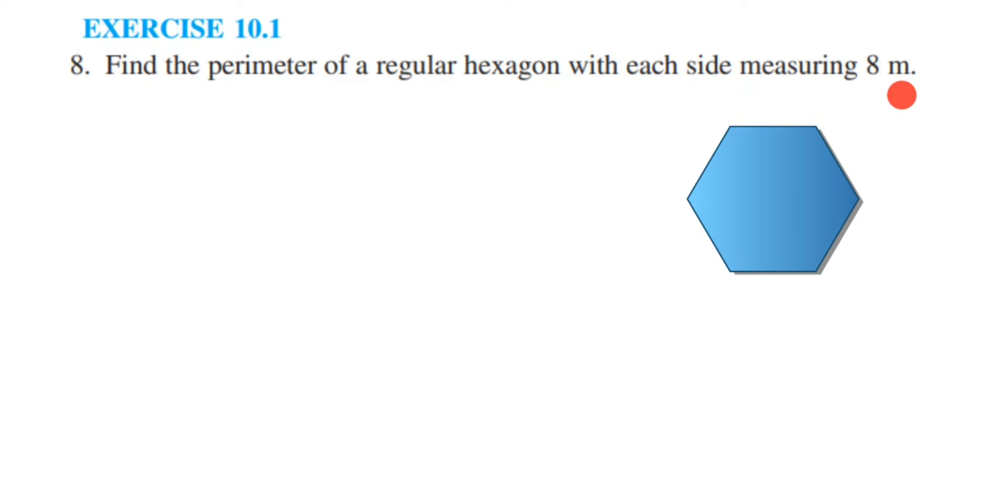Now what is regular hexagon? Hexagon is a polygon with 6 sides, like 6 side polygon is called as hexagon. You can look at the figure here, there are 6 sides: 1, 2, 3, 4, 5, 6. So it is a hexagon.